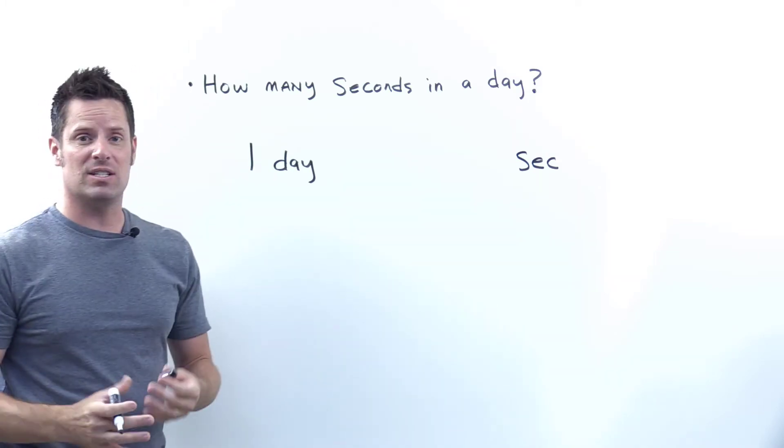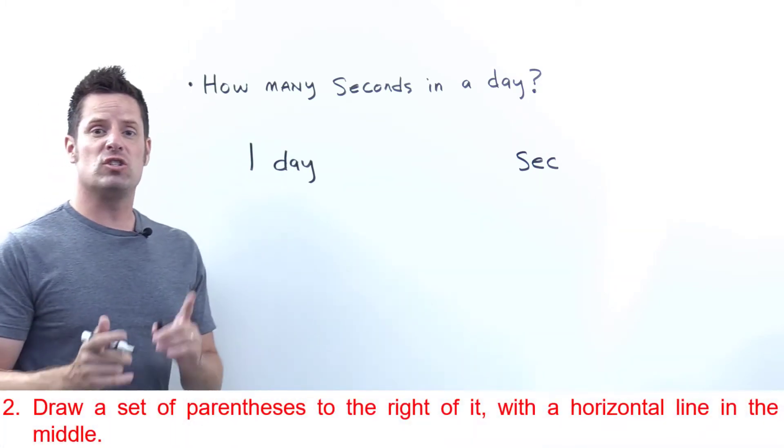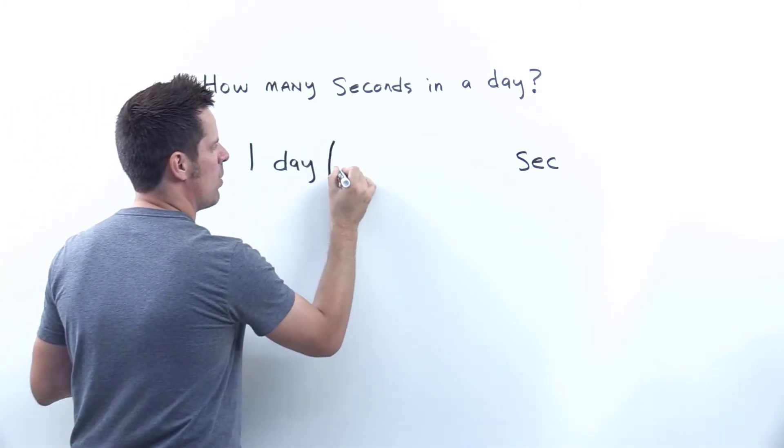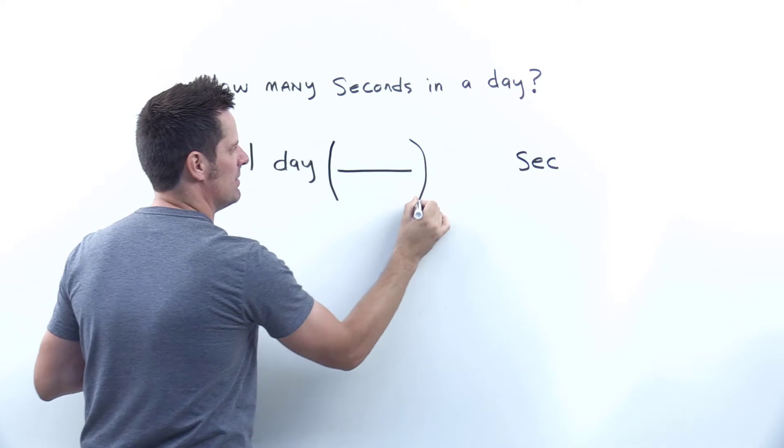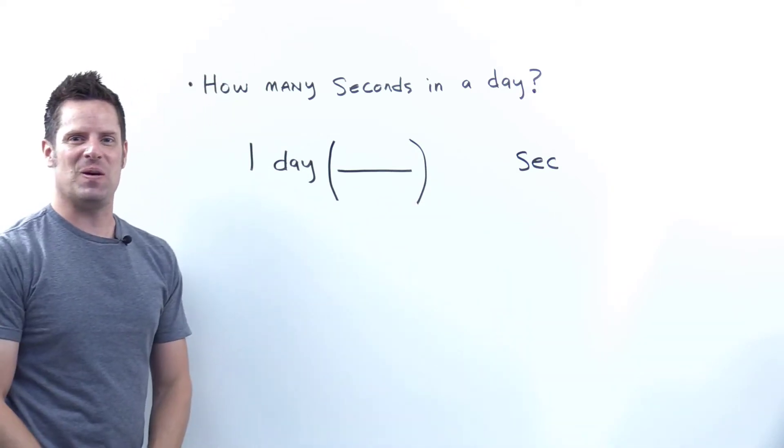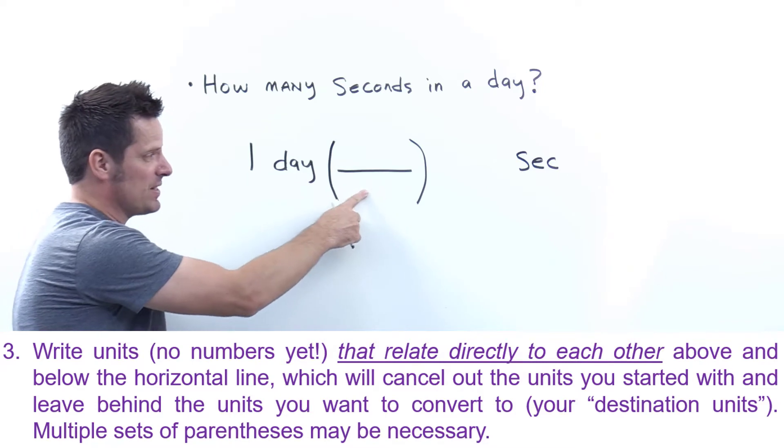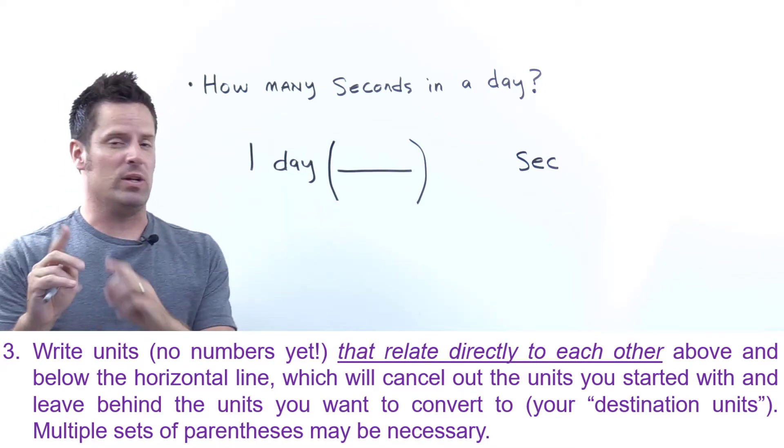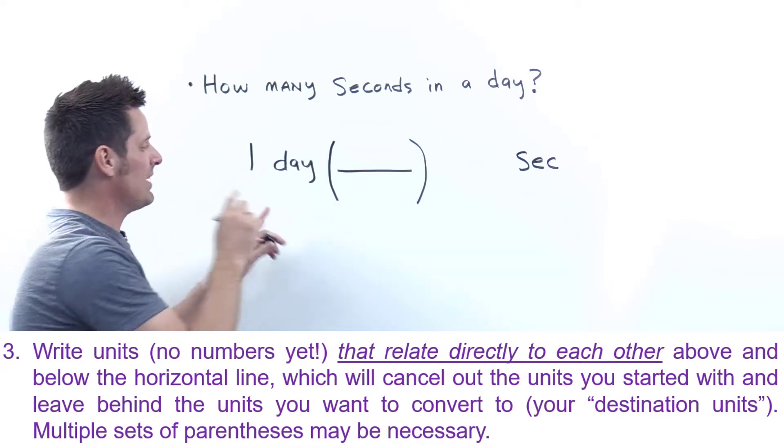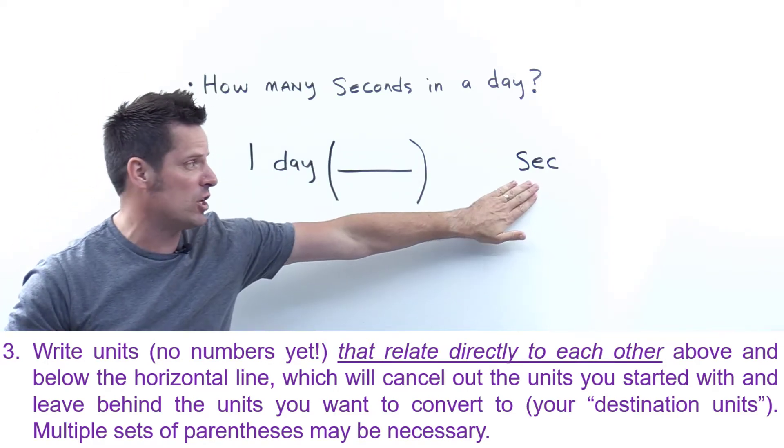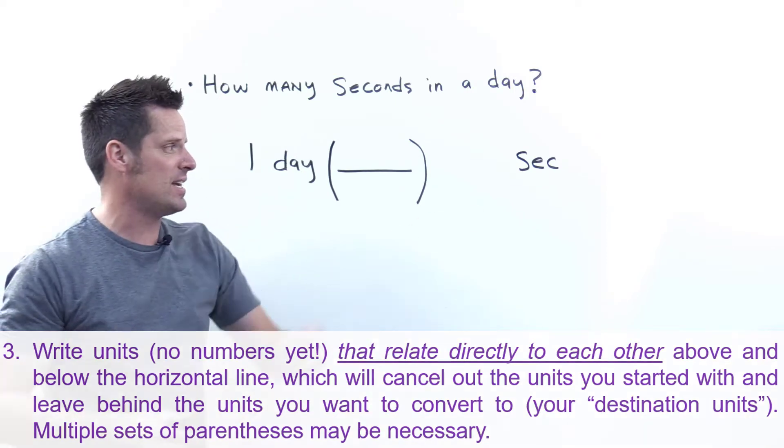Step two is draw a set of parentheses to the right of this value with a horizontal line in the middle of it. Now we're done with step two. Step three is write down units within the set of parentheses you just drew, focusing on units, no numbers yet, that will cancel out the units you start with and eventually get you to the destination units, the units you're trying to get to, in this case seconds.